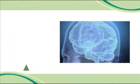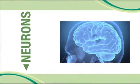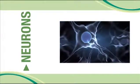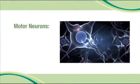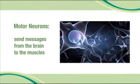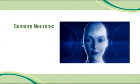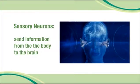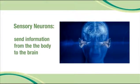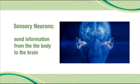Every nerve is made up of bundles of nerve fibers or neurons. Some of these nerve fibers, called motor neurons, send messages from the brain to the muscles. Other nerve fibers take information back to the brain from the muscles, the eyes, ears, skin, and the rest of our sense organs. These are called sensory neurons.